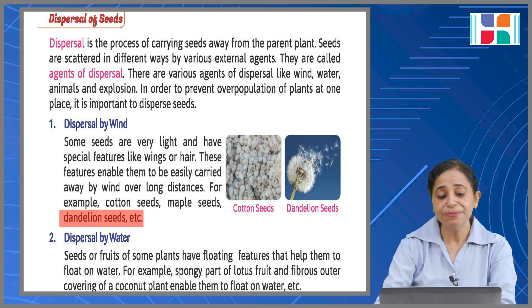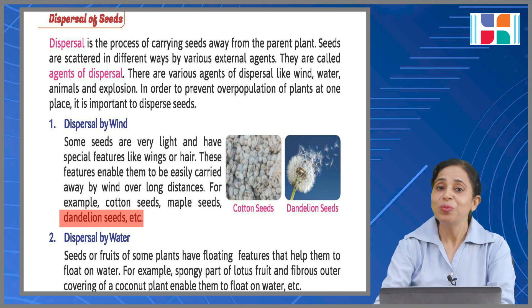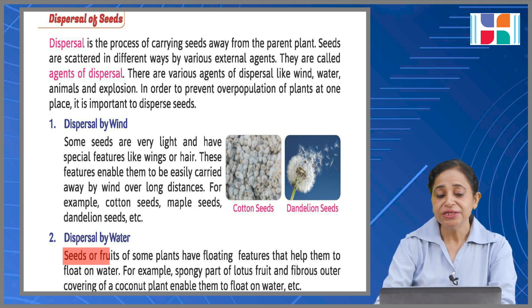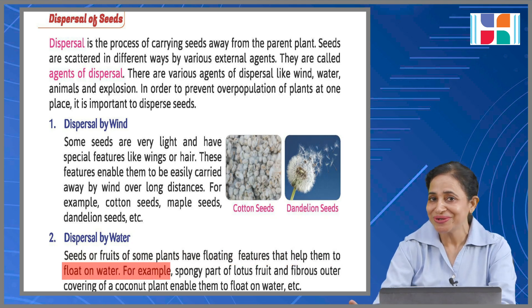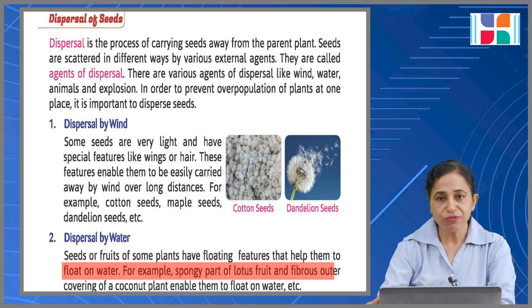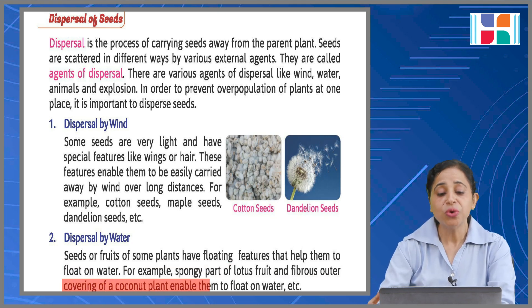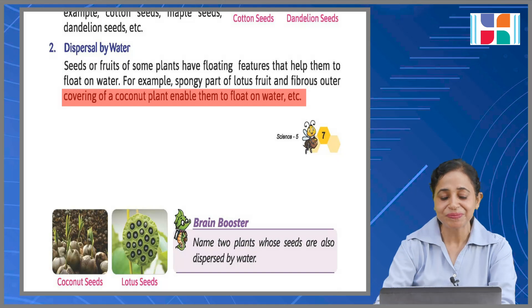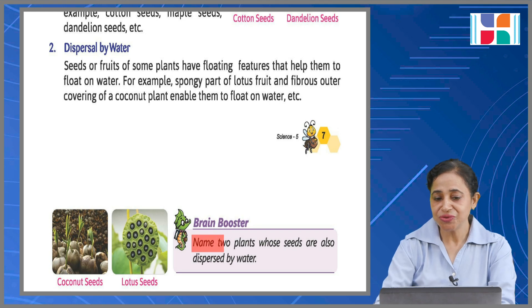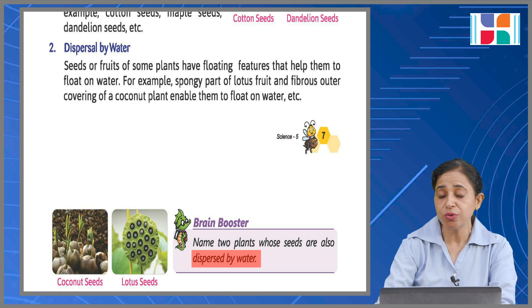Dispersal by water: seeds or fruits of some plants have floating features that help them to float on water. For example, the spongy part of a lotus fruit and the fibrous outer covering of a coconut enable them to float on water. Brain booster: name two plants whose seeds are also dispersed by water.